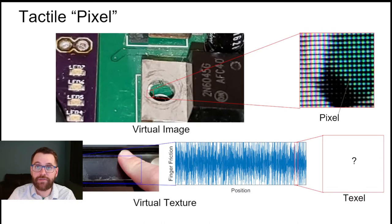We first consider the pixel. A pixel is a single, spatially discrete, single-color area of a virtual image, which combines with numerous other pixels to form a perceptually continuous image. Similarly, we can imagine a small, spatially discrete building block of a virtual texture, which we here call a texel.